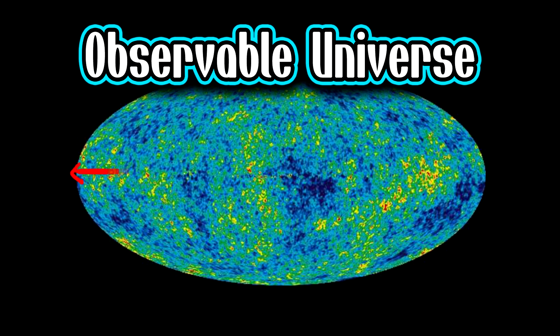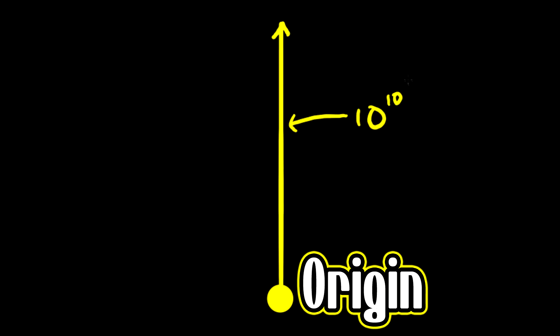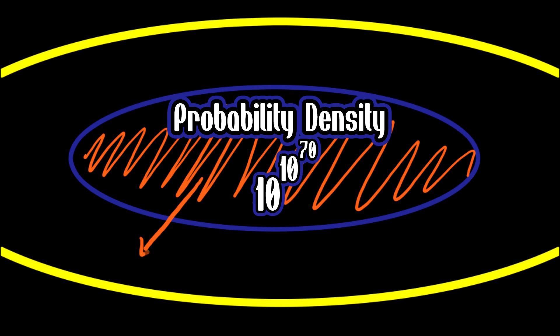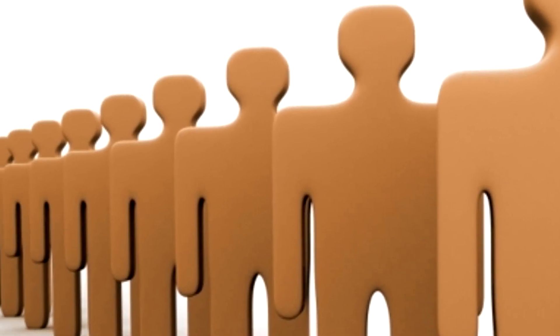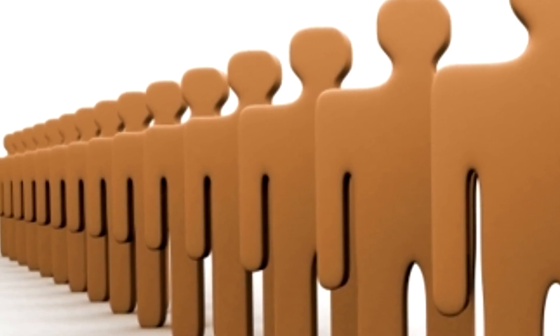If we existed in a universe that was a Googolplex meters across and traveled from our point of origin to a distance greater than 10 to the 10 to the 70, we would have exceeded the probability density of all possibilities within that section of the universe. As a result, you'd begin to see repetitions, and eventually you would find a one meter cubed volume of space configured exactly as you are — and that would be your quantum twin, which exists only because you've exceeded all possibilities within that section of space.